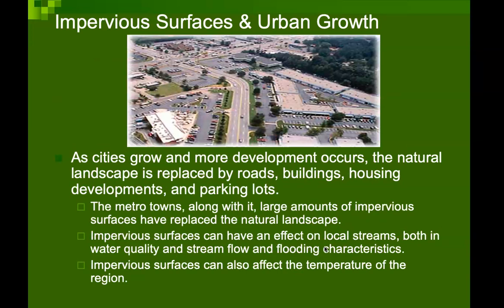As cities grow and more development occurs, the natural landscape is replaced by roads, buildings, housing developments, and parking lots. This greatly impacts the microclimate of the area. Modern towns, along with a large amount of impervious surface, have replaced the natural landscape and ecosystem. Impervious surfaces can have a great impact on local streams, both in water quantity as well as stream flow and flooding characteristics, which also leads to a great impact on the microclimate of the area.